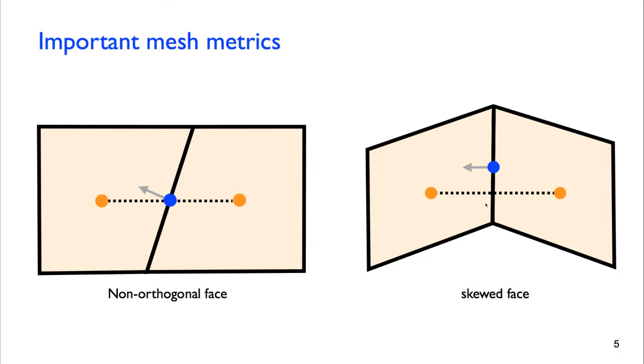A second type of error can come from skewed faces. If we take this line between the two cell centers, we can see it is parallel to the normal in this case, so it's not non-orthogonal. But this line doesn't go through the face center. So that means it can introduce some skewness. Both of these things can reduce the order of accuracy and the absolute accuracy of the final volume discretization.